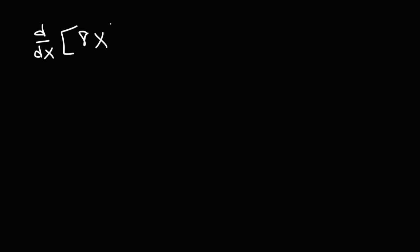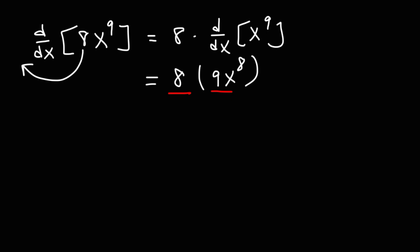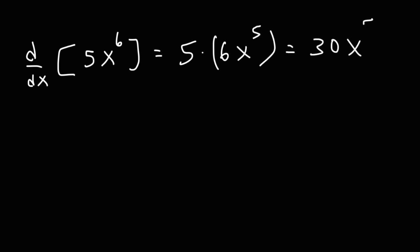Now, what if we want to find the derivative of 8x to the ninth power? What you could do is move the constant to the front. This is equivalent to 8 times the derivative of x to the ninth power. Using the power rule, the derivative of x to the ninth power will be 9x to the 8. And then you could multiply the 8 and the 9 — so 8 times 9 is 72. Similarly, the derivative of 5x to the sixth is 5 times the derivative of x to the sixth, which is 6x to the fifth, giving us 30x to the fifth.